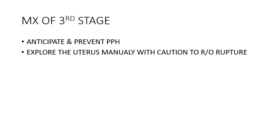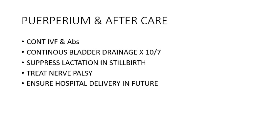For management of the third stage, anticipate and prevent postpartum hemorrhage. Explore the uterus manually with caution. Continue IV fluids and antibiotics. Maintain continuous bladder drainage for 10 to 14 days — by creating a diversion you reduce the risk of fistula developing. Suppress lactation with a dopamine agonist, treat nerve palsy, and ensure delivery in a well-equipped facility in the future. Thank you very much.